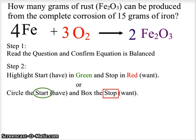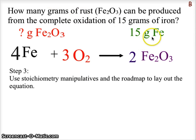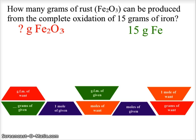I suggest to students that they always mark their starting point and stopping points from the question, and eliminate the words that may not have any influence on the actual process of stoichiometry. For our situation, we're looking at 15 grams of iron going to how many grams of rust.